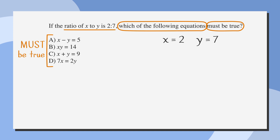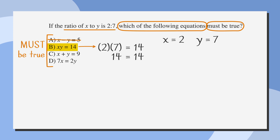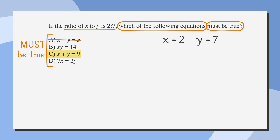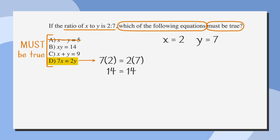Let's go to the answer choices and see which one must be true. In answer choice A, x minus y equals 5 becomes 2 minus 7 equals 5, which is not true — cross off A. In answer choice B, x times y equals 14 becomes 2 times 7 equals 14, which is true. In answer choice C, we get 2 plus 7 equals 9, which is also true. Answer choice D also turns out to be true. We picked numbers and crossed off one wrong answer, but we still have three remaining.